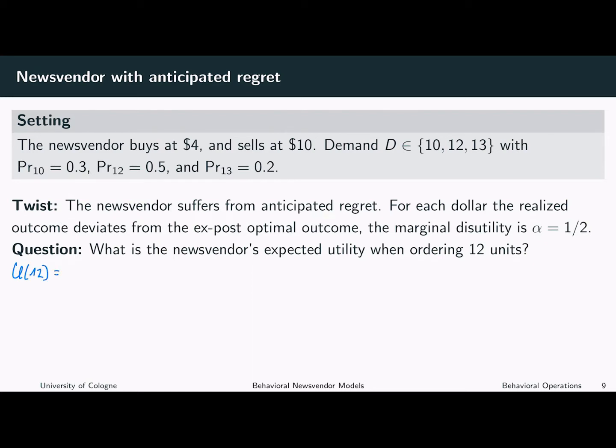We have a newsvendor ordering 12 units. With probability 0.3, the demand will be 10. In this case, the newsvendor sells 10 units at a price of 10 and bought 12 units at a price of 4, which results in a profit of 52. If the newsvendor had ordered the optimal order quantity, she would have ordered only 10 units. 10 units at a price of 10 minus 10 units at a price of 4 results in a profit of 60.